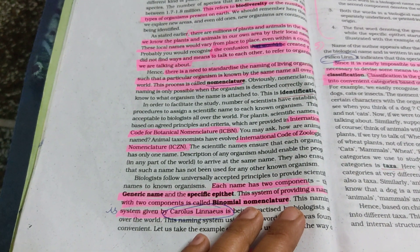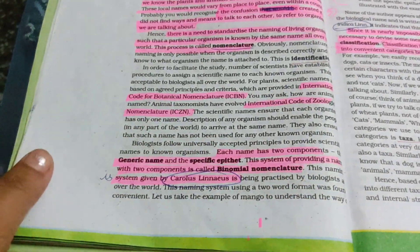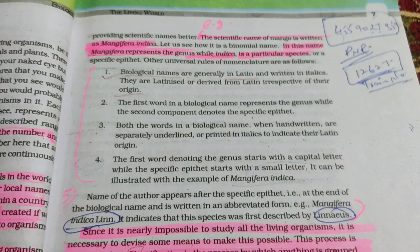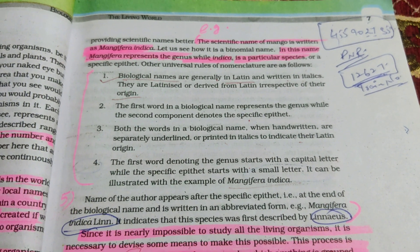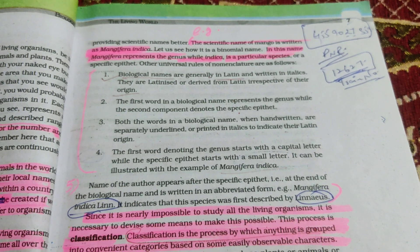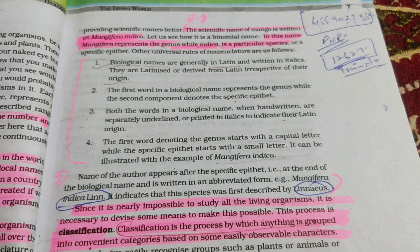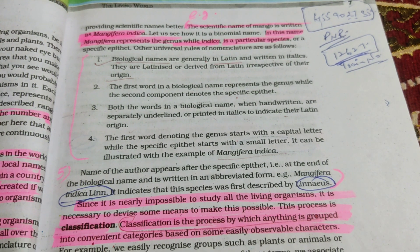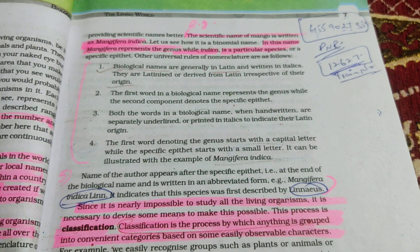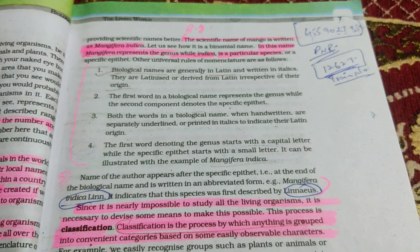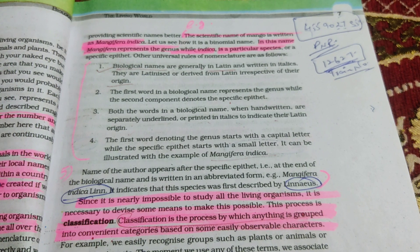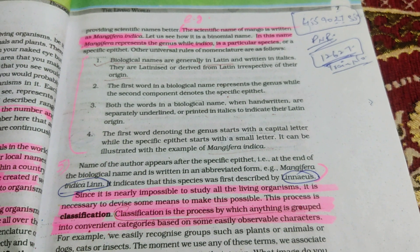What are the rules of binomial nomenclature? Number one: biological names are generally in Latin, written in italics, or latinized irrespective of their origin. Number two: the first word in the biological name represents the genus while the second word represents the species. Number three: both words when handwritten are underlined separately, or if printed, written in italics. Number four: the first word denoting the genus starts with a capital letter while the species starts with a small letter. Number five: the name of the author should be written at the end of the species name in abbreviated form.